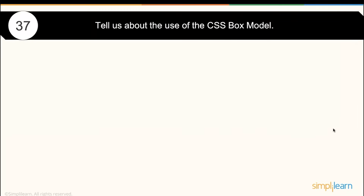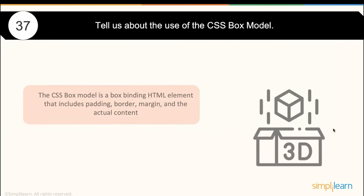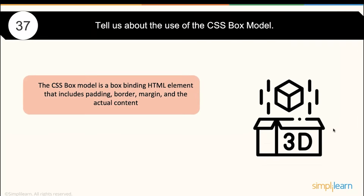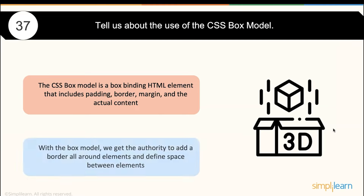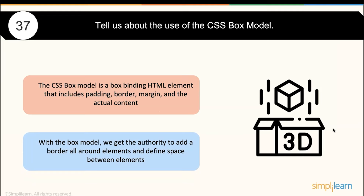Tell us about the usage of the CSS box model. The box model is a box binding around HTML elements that includes padding, border, margin, and the actual content — all for better alignment. The box model gives you the authority to add a border around elements and define space between elements.